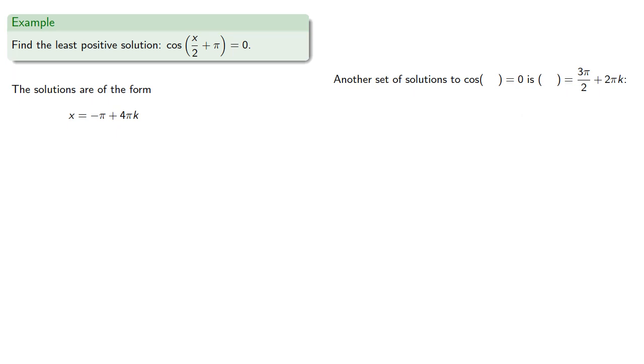And so we find that the least positive solution of this type is going to be where k equals 0. And so the least positive solution overall is x equal to pi.